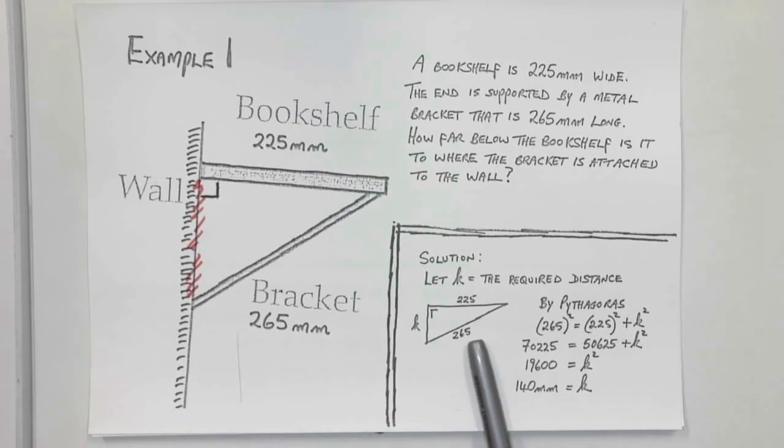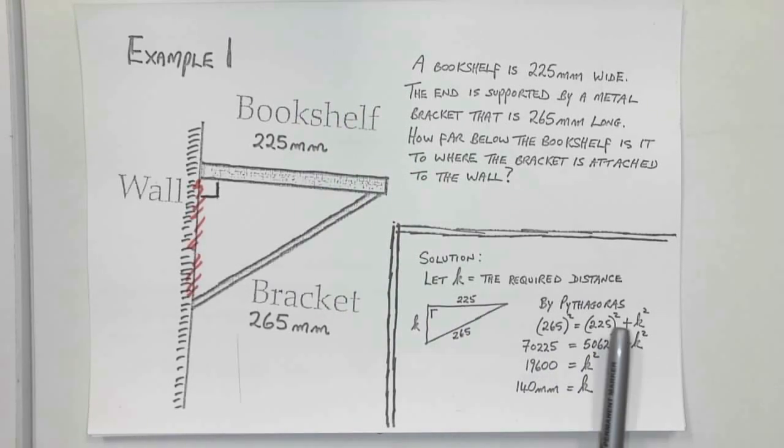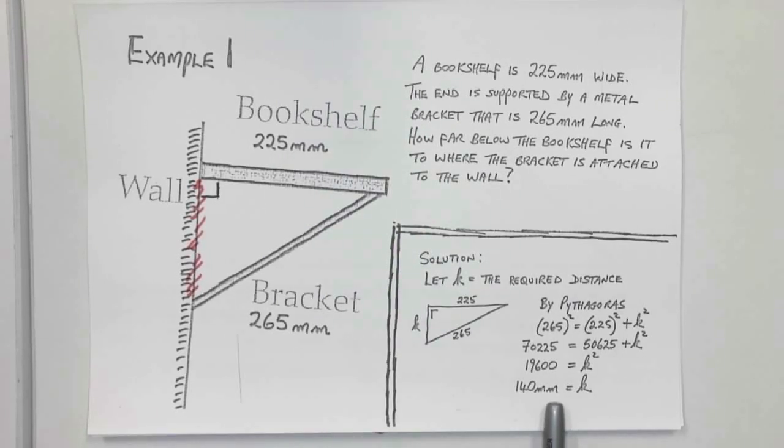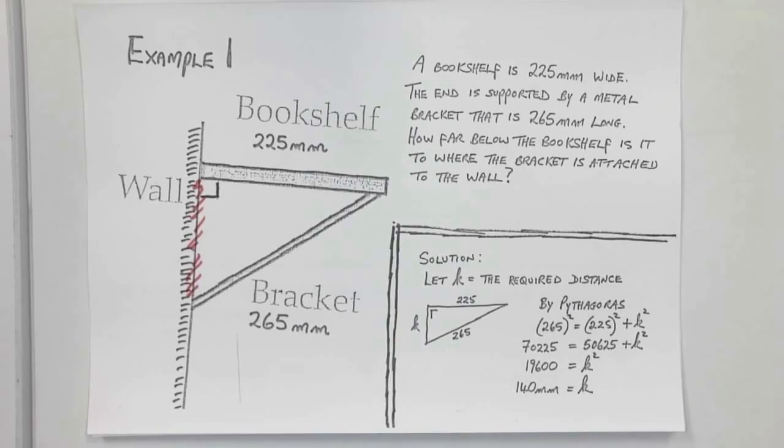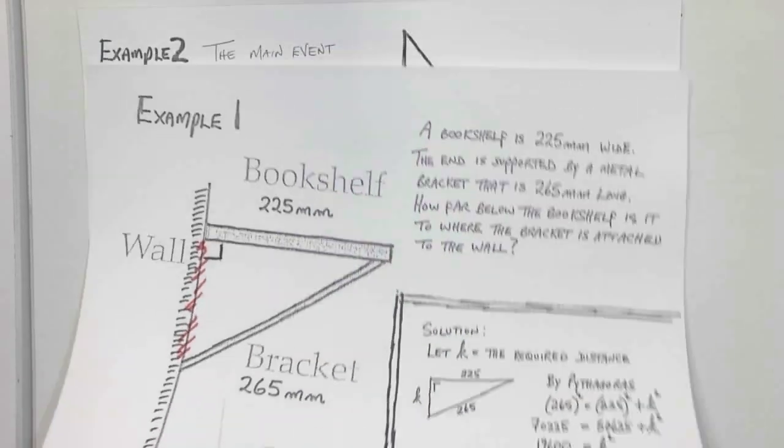So we're just using Pythagoras on it. Let K equal the required distance. This here is 225, this is 265. Pythagoras would say 265 squared equals 225 squared plus K squared. Use your calculator to multiply them out and subtract 50,625 from both sides. Hit your square root button. And just to be sure, make sure you have the units down. Really nice, simple, straightforward question just to set us up.